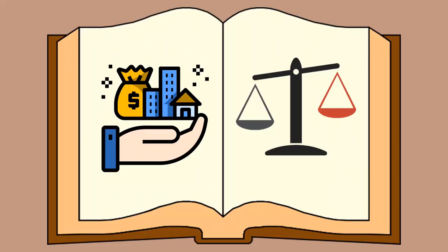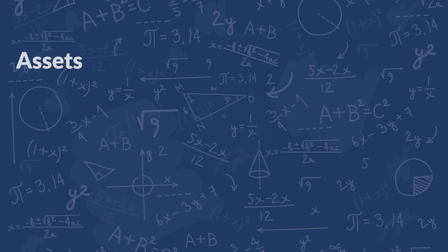So now we're going to take each component into consideration. Assets can include anything from cash, supplies, plant, property and equipment, and accounts receivable. A simple note here is that a receivable is an asset that promises a future inflow of resources. Anytime your customer pays you on credit or performs any kind of non-cash transaction, you need to record it directly into accounts receivable instead of the cash account.